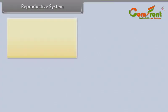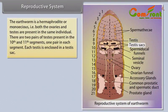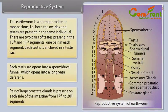Reproductive System: The earthworm is a hermaphrodite or monoecious — both ovaries and testes are present in the same individual. There are two pairs of testes in the 10th and 11th segments. Each testes is enclosed in a testes sac, which opens into a spermiducal funnel leading into a long vas deferens. A pair of large prostate glands is present on each side of the intestine from the 17th to 20th segments.